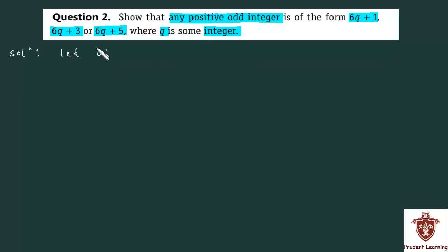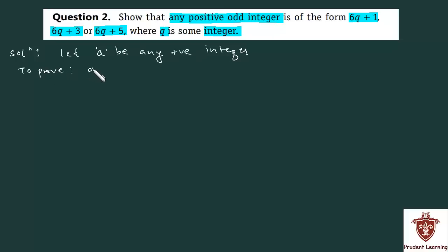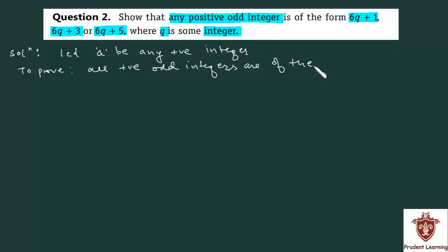Let a be any positive integer. Here we have assumed a as any positive integer — it could be even or odd. Now we have to prove that all positive odd integers are of the form 6q plus 1, 6q plus 3, or 6q plus 5.